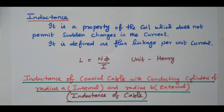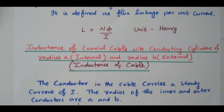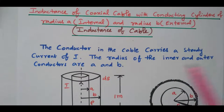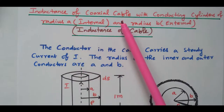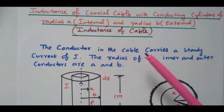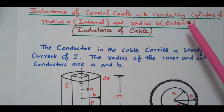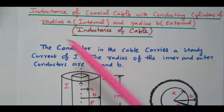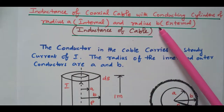Now we will see the inductance of a coaxial transmission line. A coaxial cable contains two conductors — inner and outer — and the axis is the same for both conductors, which is why it is called a coaxial cable. The inner conductor has radius A and the external conductor has radius B. It is an underground cable.